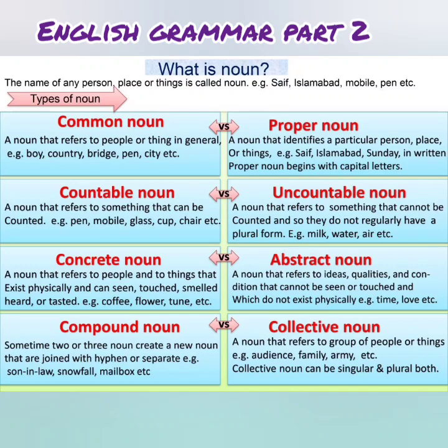The sixth is abstract noun — a noun that refers to ideas, qualities and conditions that cannot be seen or touched and do not exist physically. For example: time, love, etc.